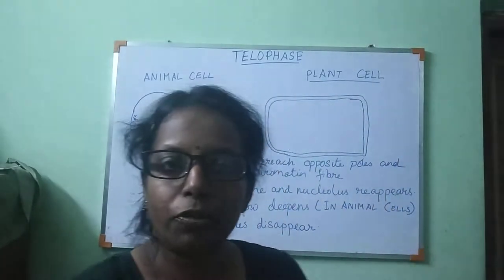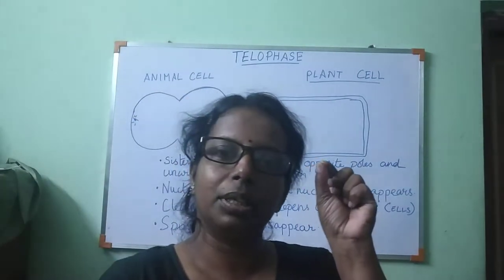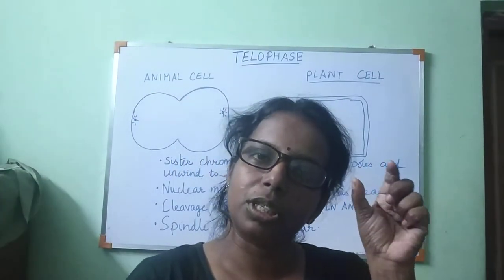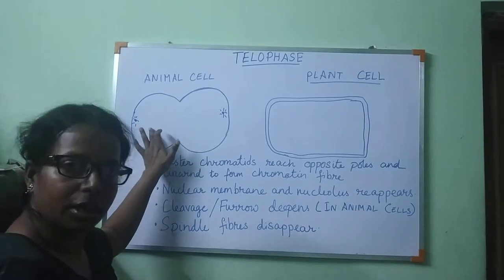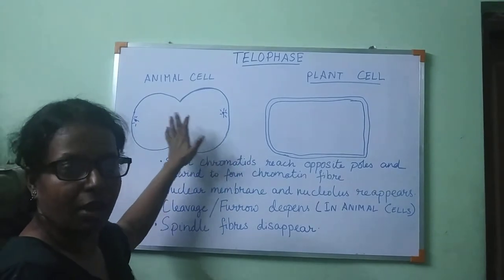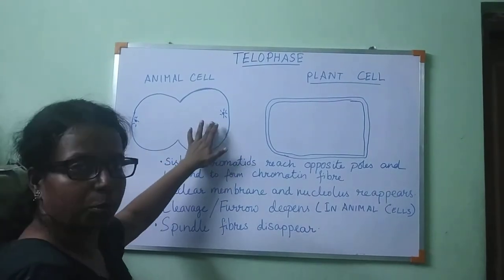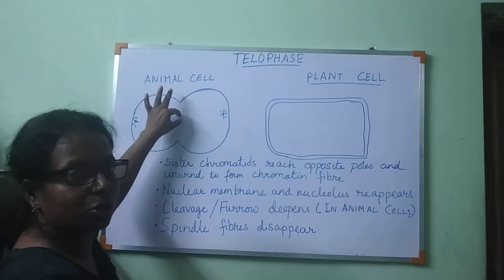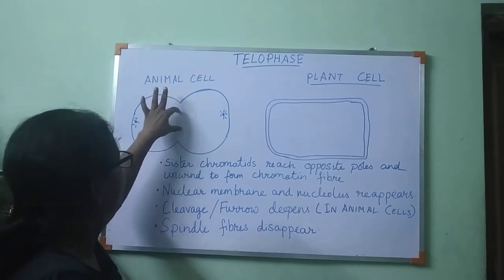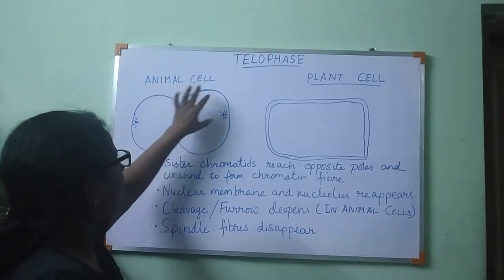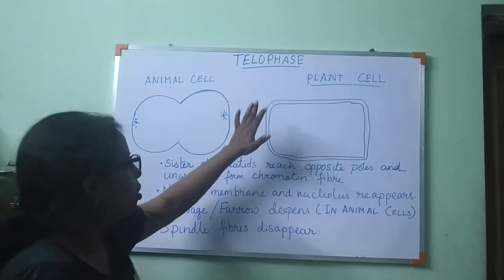Now, in prophase, if you remember, the centrioles divide. So here the centrioles have already divided and come to the two opposite poles. The cell is beginning to divide, and this last phase is known as telophase.